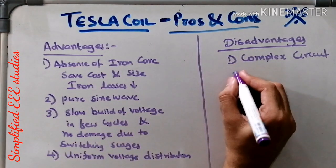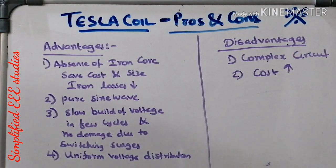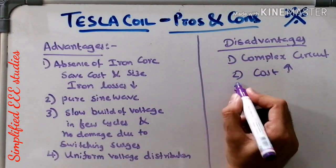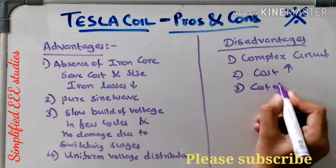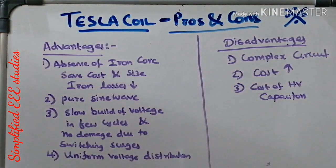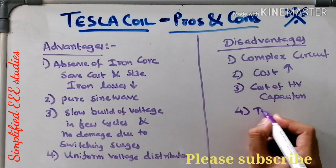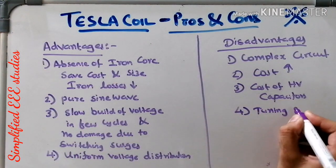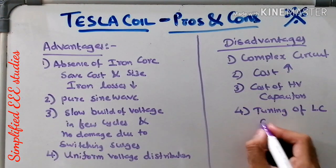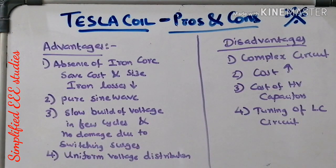The second drawback is high cost — arranging and tuning the circuit is not cost effective or affordable. The cost of high-voltage capacitors is also very high. Additionally, tuning of the LC circuit is a cumbersome and difficult task. These are a few drawbacks of the Tesla coil.